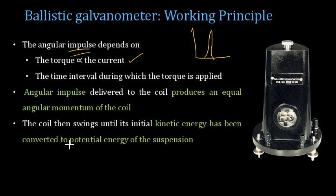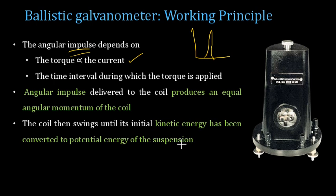This deflection is in terms of a swing. The swing continues until the kinetic energy gained during the impulse is completely converted to the potential energy of the ribbon suspension. The swing stops once the entire kinetic energy is converted to potential energy, at which point the restoring torque from the ribbon mechanism acts and the maximum swing is achieved up to that point.